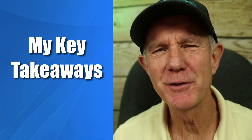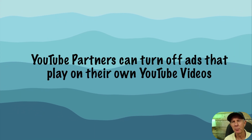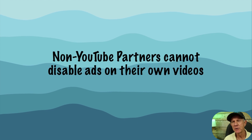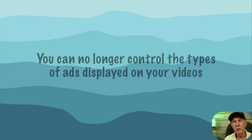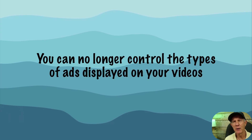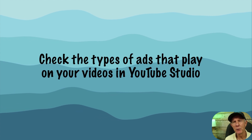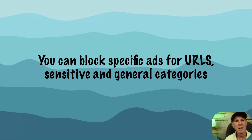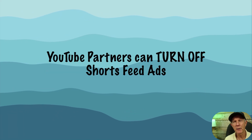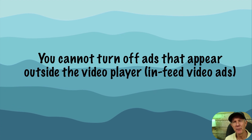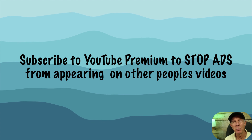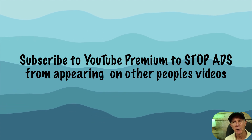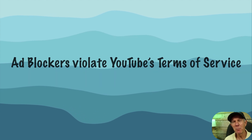Here are the key takeaways from this video: YouTube partners can turn off ads that play on their own YouTube videos. Non-YouTube partners cannot disable ads on their own videos. You can no longer control the types of ads displayed on your videos. Check the types of ads that play on your videos in YouTube Studio. You can now block specific ads for URLs, sensitive and general categories. YouTube partners can also turn off shorts feed ads. You cannot turn off ads that appear outside the video player. To stop ads on other people's videos, subscribe to YouTube Premium. Ad blockers violate YouTube's terms of service, so stick with YouTube Premium.